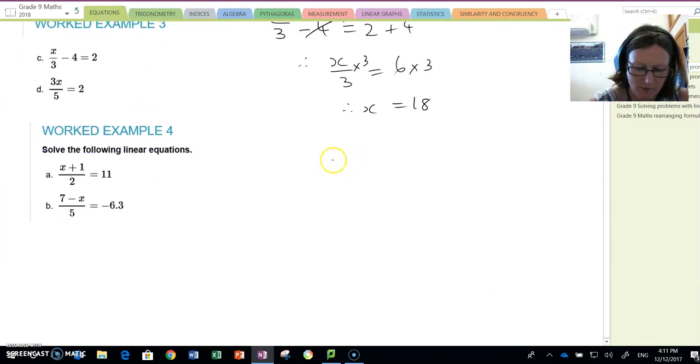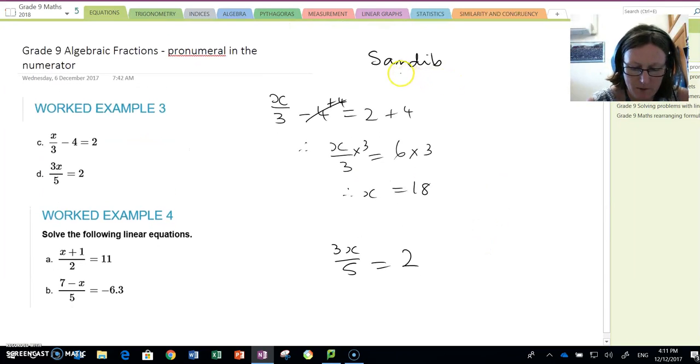Our next example, 3x divided by 5 equals 2. SAMDIB, multiplication and division is what we have here. It doesn't really matter which one we do first because they're, if you like, equal weight.